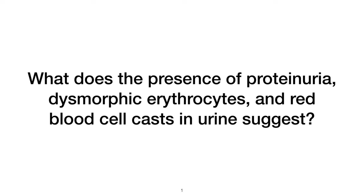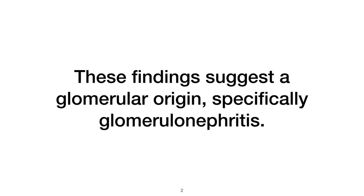What does the presence of proteinuria, dysmorphic erythrocytes, and red blood cell casts in urine suggest? These findings suggest a glomerular origin, specifically glomerulonephritis.